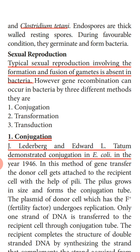During favorable conditions, when suitable conditions return, the endospore will germinate — the thick wall of the endospore will rupture and the bacteria will form again. So we have studied two types of asexual reproduction in bacteria: binary fission during favorable conditions, and endospore formation during unfavorable conditions.